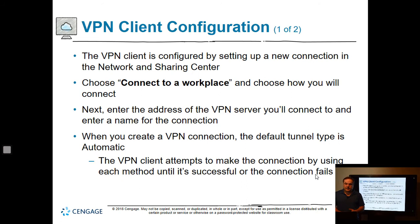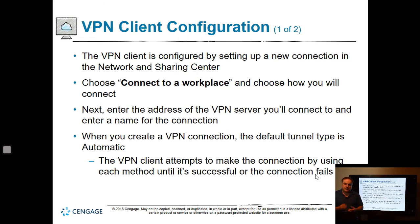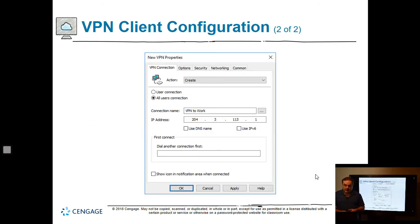On the client side, the VPN client is configured by setting up a new connection in Network and Sharing Center — unless you're using Direct Access, which doesn't require this. You connect to a workplace through the wizard in Network and Sharing Center and work through the configuration.